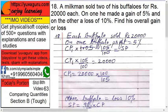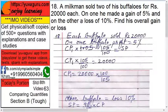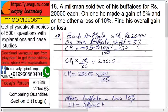Welcome to IMO Videos, Standard 8th, video number 63 — Comparing Quantities, Section B, Tough. A milkman sold two of his buffalos for rupees 20,000 each. In one he made a profit of 5% and in the other he made a loss of 10%. Find the overall gain or loss. Here you don't know anything except the selling price of each buffalo and the profit or loss percentages.